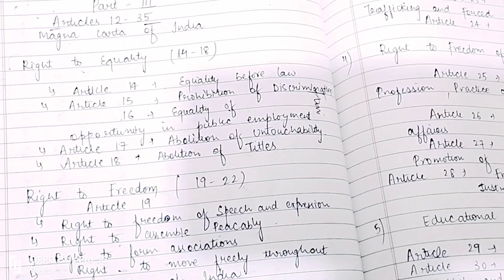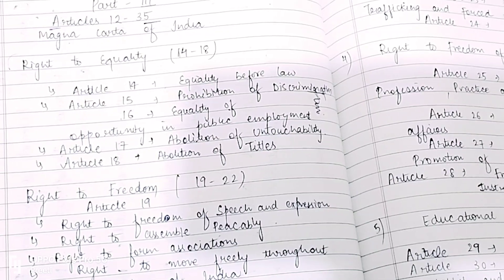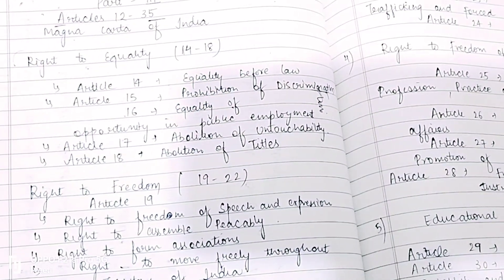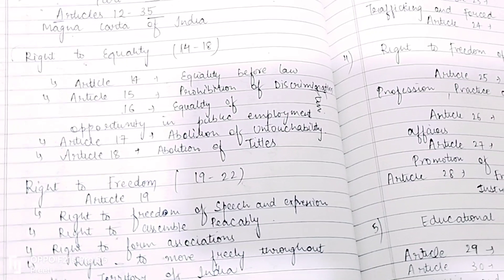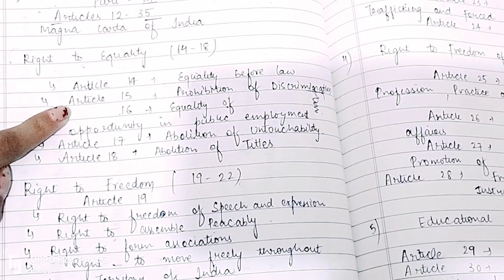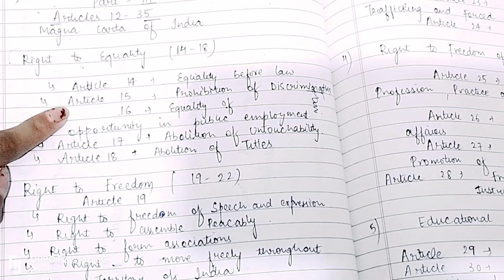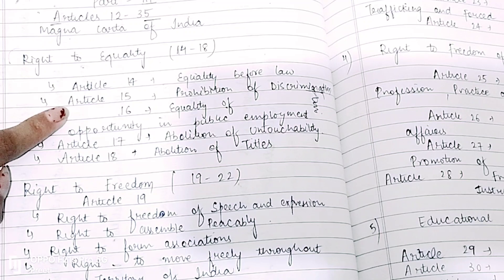First comes our Right to Equality, which covers Articles 14 to 18. Article 14 is equality before law. Article 15 is prohibition of discrimination. Article 16 is equality of opportunity in public employment. Article 17 is abolition of untouchability, and Article 18 is abolition of titles.